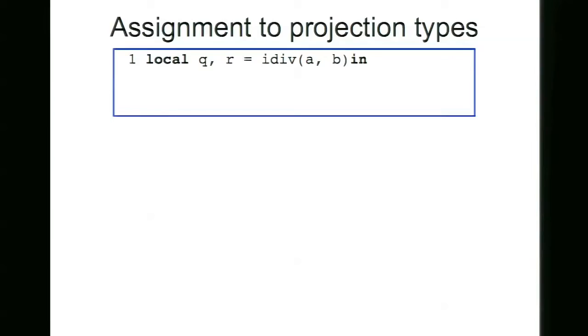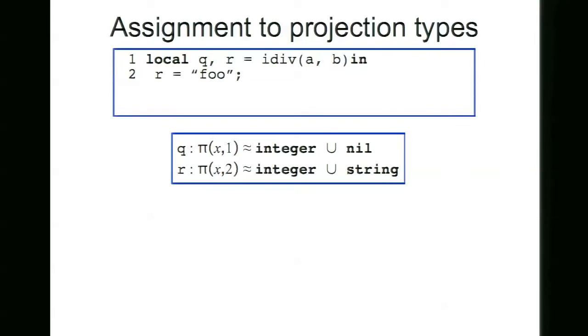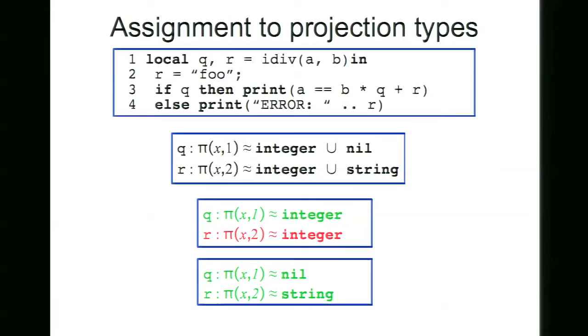Like here in this example, it looks fine re-assigning a string to a variable R because it is projecting its type to integer union string. But if we allow that, we are also allowing the programmer to break the dependency relation that exists between these types. So this means that we are assuming that R is integer inside if, but now it would actually contain a string. So that's the reason why they are not allowed.